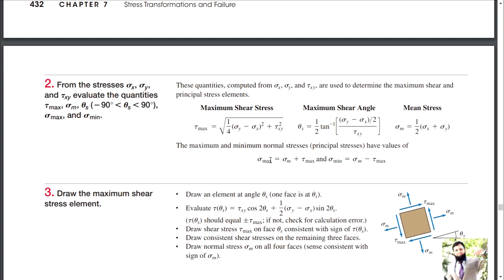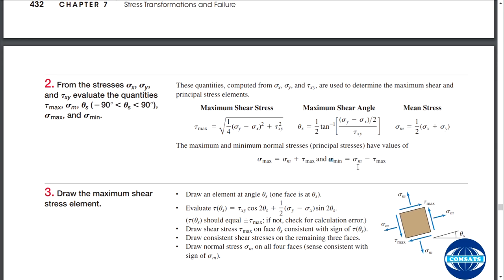From the mean stresses and maximum shear stresses, you can calculate maximum and minimum principal stresses. Maximum principal stress is obtained by adding shear stresses and mean stresses. Minimum principal stress is obtained by subtracting shear stresses from mean stresses.